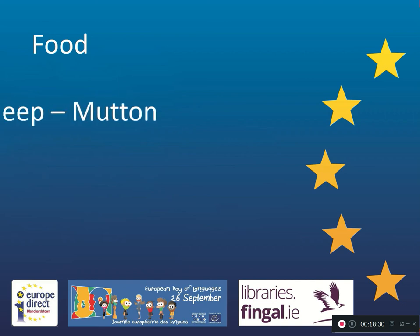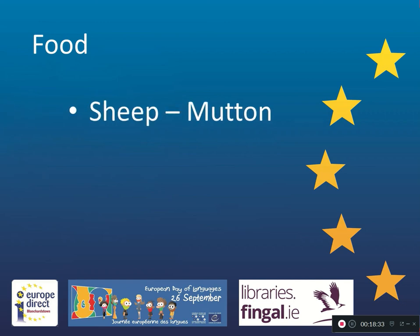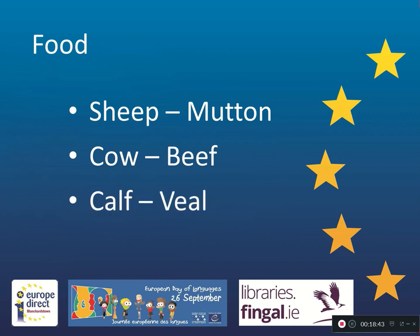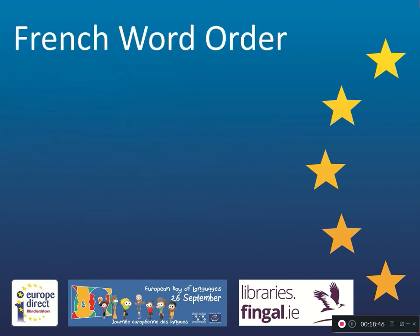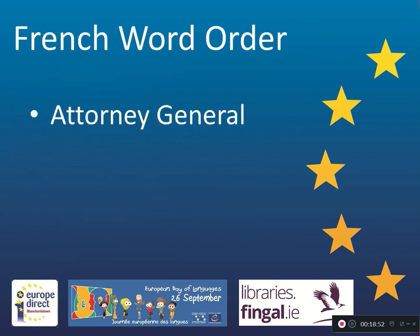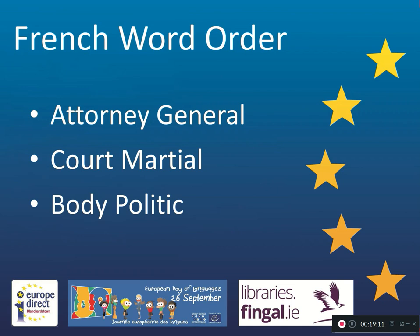We see this evident in food. Often the Germanic word is used for the animal whereas the meat that comes from that animal is given a French word: 'sheep' but 'mutton' or 'mouton' in French; 'cow' but we get 'beef' or 'boeuf' in French; from a 'calf' we get 'veal' or 'veau' in French. French word order has also remained in certain phrases. Look at something like 'attorney general' — surely 'general attorney' would be more typical in English. However it has kept the French way of putting the adjective after the noun. We also have 'court martial' or 'body politic' — again they don't seem in the right order. This is the French influence.